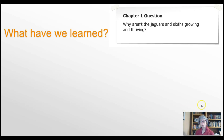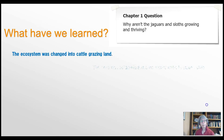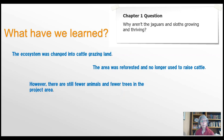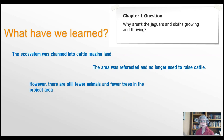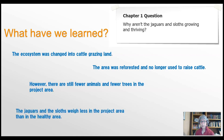What have we learned? The ecosystem has changed into cattle-raising land. The area was reforested and is no longer used to raise cattle. However, there are still fewer animals and fewer trees in the project area, and the jaguars and sloths weigh less in the project area than in the healthy area.